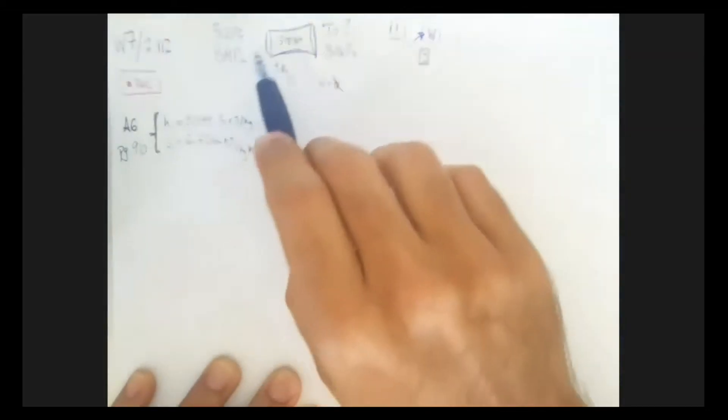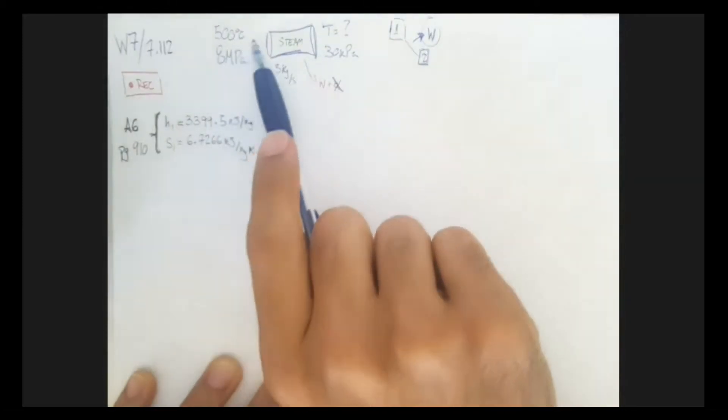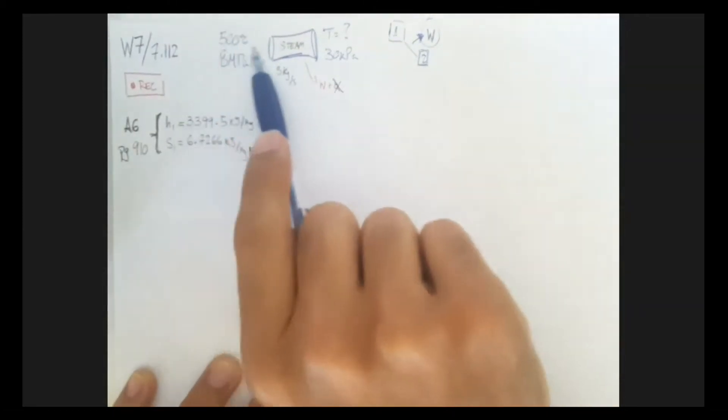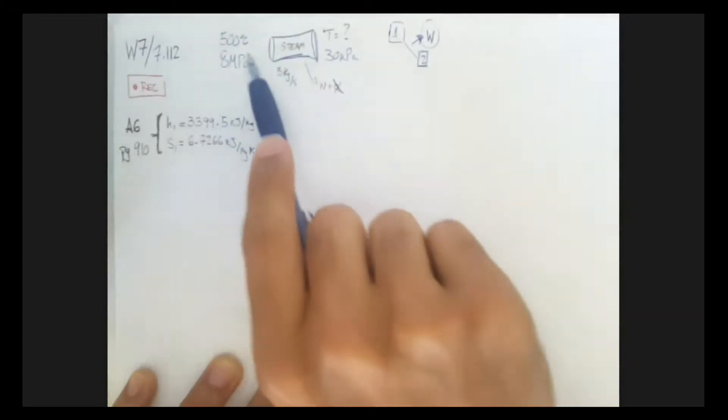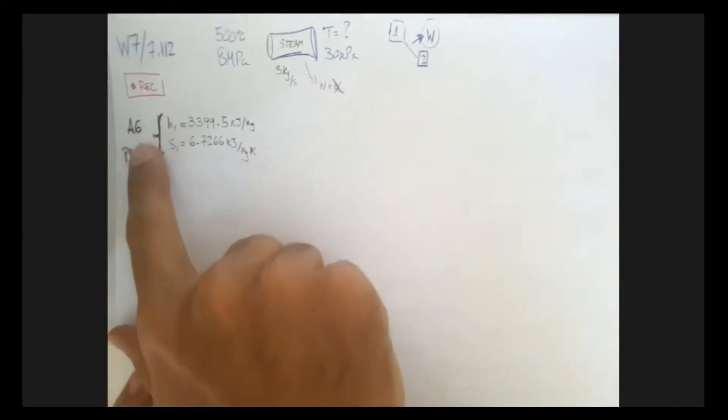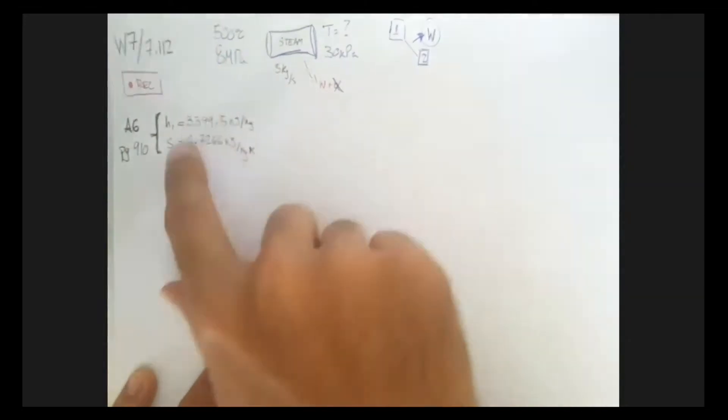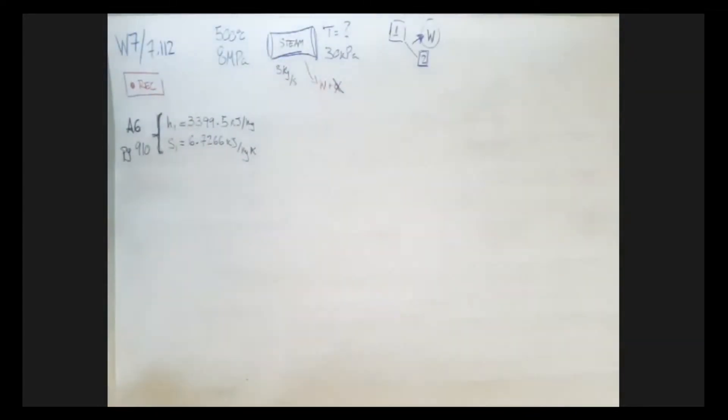The second thing is we're going to look at this set of properties, look on the table, on the mixture table, and we'll see that this is a superheated fluid, right? Because our temperature is greater than the saturated temperature, or our pressure is smaller than our saturated pressure. And then because it's superheated, I can go to table A6 and grab the properties for my first state at the superheated table. So I already grabbed the entropy and the enthalpy.